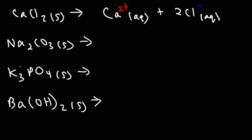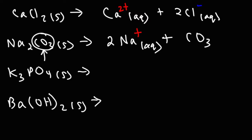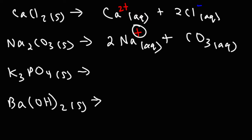For sodium carbonate, there are two sodium ions — the subscript is 2 — so that becomes the coefficient. Sodium is an alkali metal in group 1, so it has a plus 1 charge. Carbonate is a polyatomic ion. Since two sodium ions give a total charge of 2 plus, carbonate must have a 2 minus charge to neutralize it. If you memorize your polyatomic ions, you'll already know this charge.